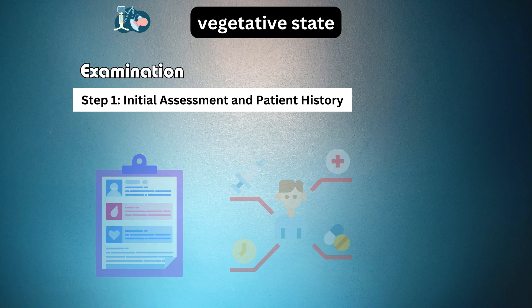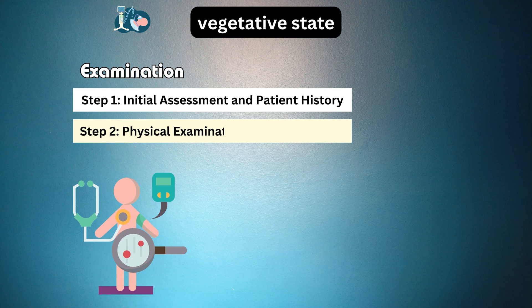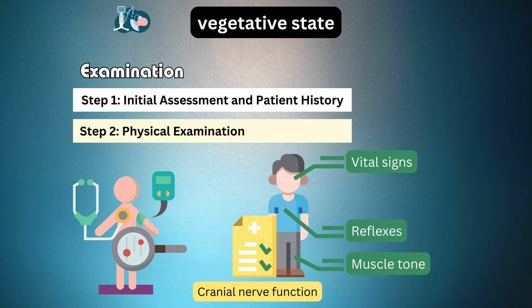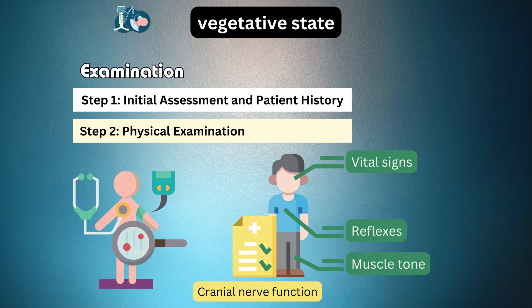Step 2: Physical examination. A thorough physical assessment helps gauge the patient's overall health and neurological status. We check vital signs, muscle tone, reflexes, and cranial nerve functions meticulously.